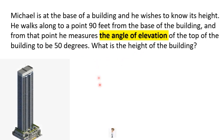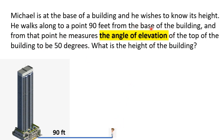Michael is at the base of the building and he wishes to know its height. He walks to a point 90 feet from the base of the building. From that point he measures the angle of elevation — meaning it's going up — to the top of the building to be 50 degrees. The question is: what is the height?